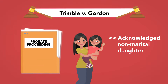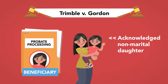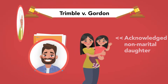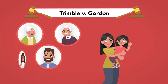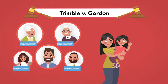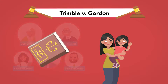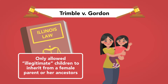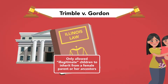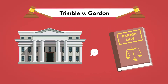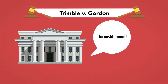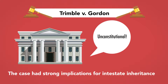The girlfriend opened a probate proceeding seeking to have the daughter named as the beneficiary of Gordon's estate. However, the probate court named Gordon's mother, father, siblings, and half-brother as the beneficiaries pursuant to Illinois law at the time, which only allowed illegitimate children to inherit from a female parent or her ancestors. On appeal, the Supreme Court struck down the Illinois law as unconstitutional. The case had strong implications for intestate inheritance purposes.